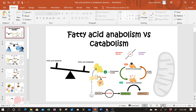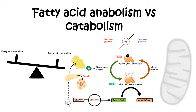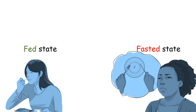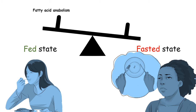In this video we'll talk about fatty acid anabolism vs catabolism and how it is regulated by hormonal inputs. Fatty acid metabolism is dependent upon the metabolic state — whether you are fed or fasted. Generally, fatty acid anabolism takes place in a fed state whereas catabolism takes place in the fasted state. The choice between anabolism and catabolism is regulated via hormones such as insulin or glucagon.